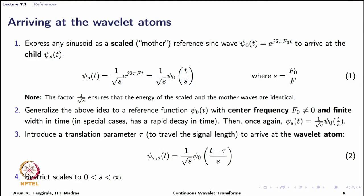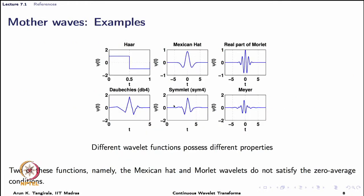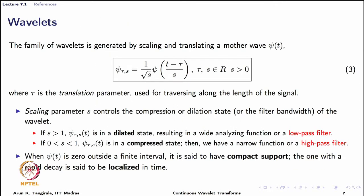With this we have the family of wavelets in general, where psi of t is called the mother wave. Psi subscript tau, s given by this expression is the generic child of the mother wave, and the entire family that we obtain is called a family of wavelets.